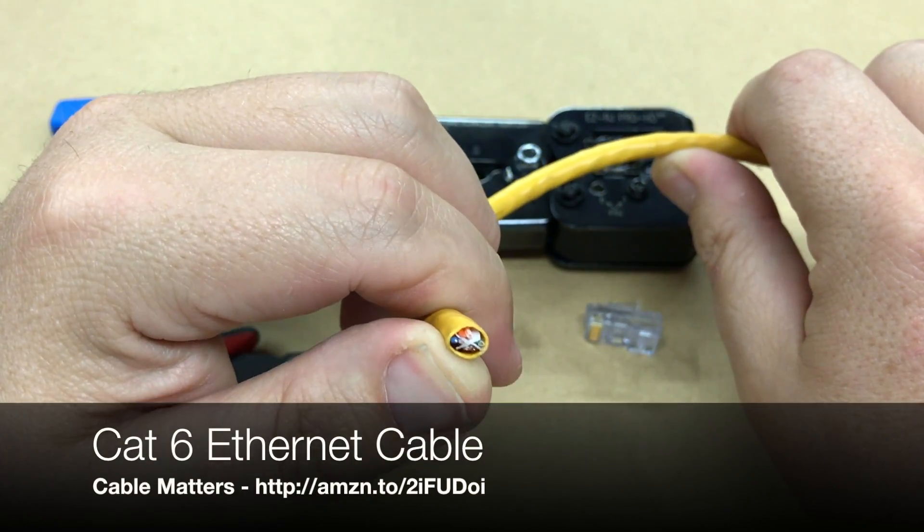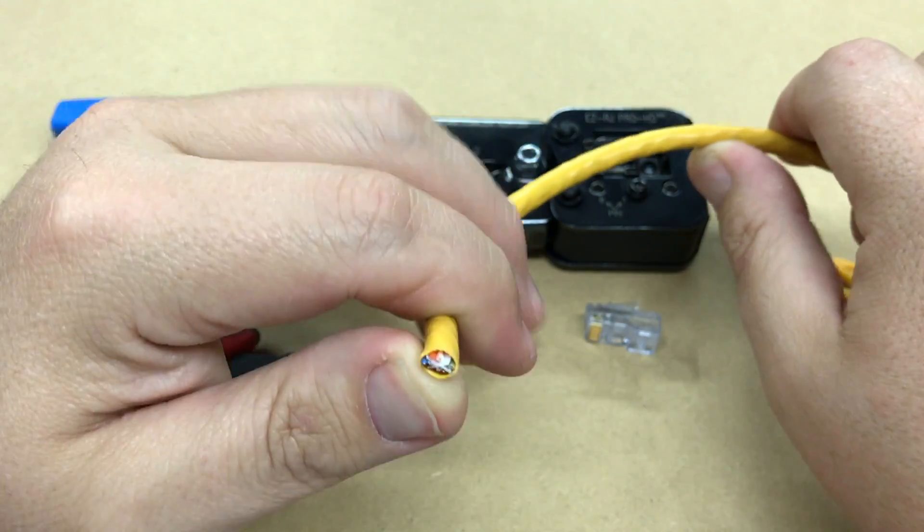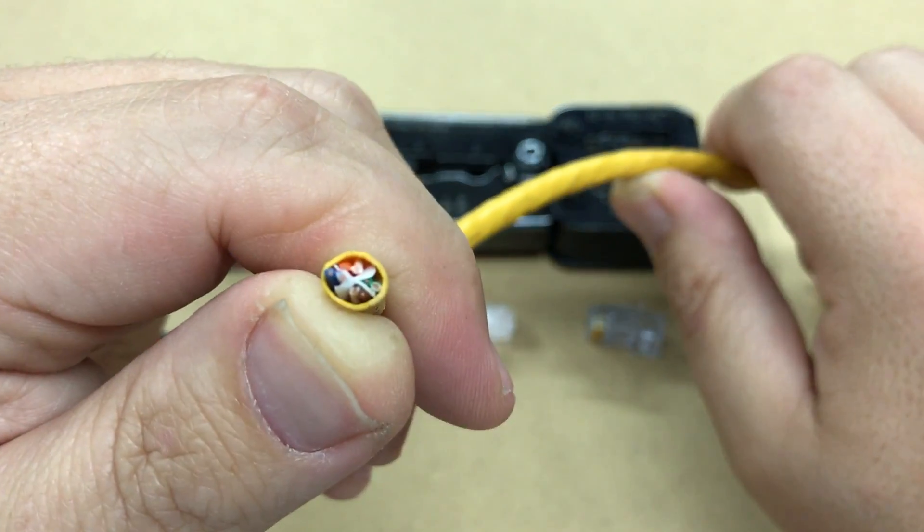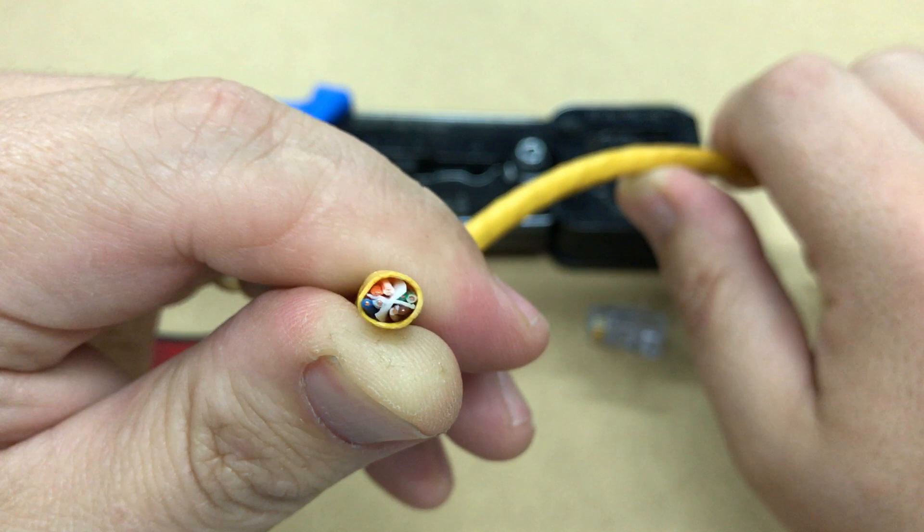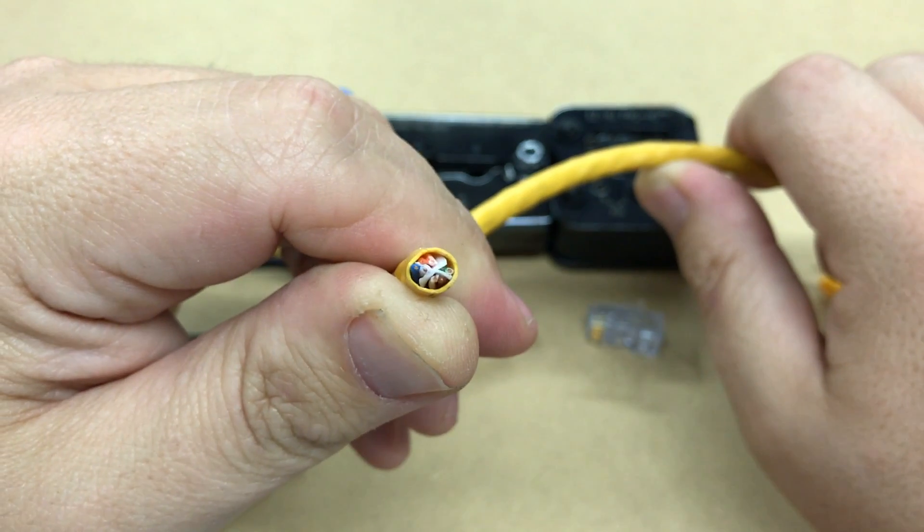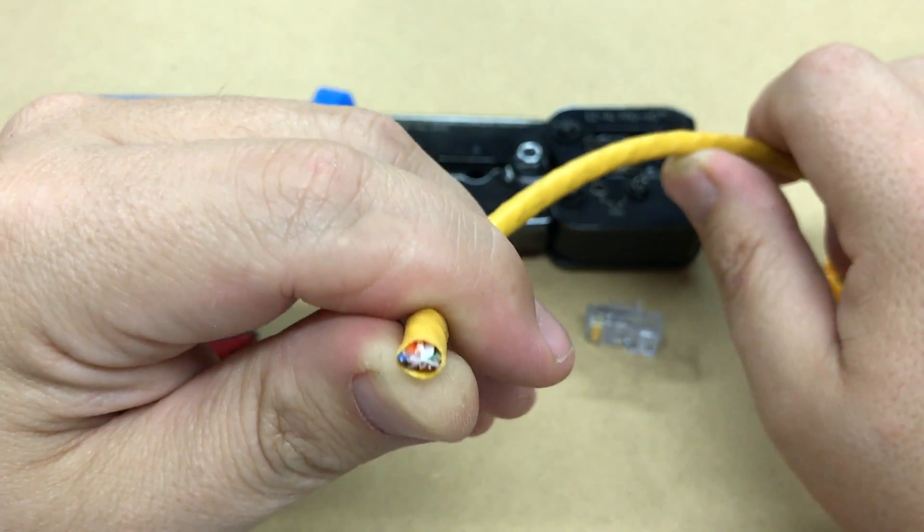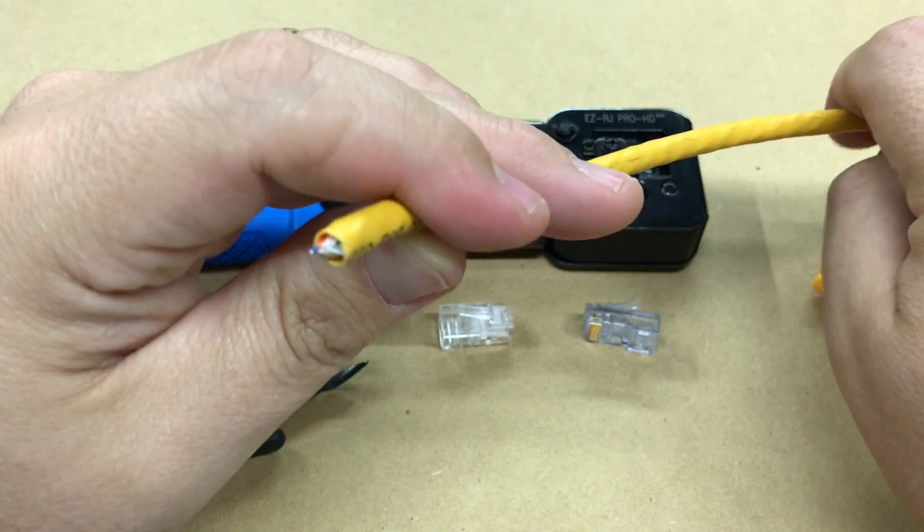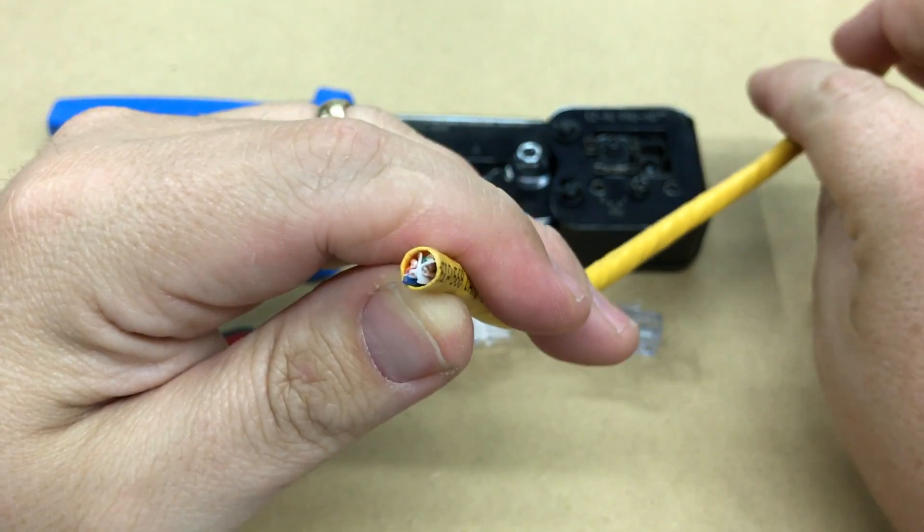You wouldn't think that would make that much of a difference, but it does. And if you notice right in the middle there, that white X can cause some problems when you're trying to crimp if you're not used to dealing with it. I'm not saying this is how a professional cable terminator would do it, this is how I do it.